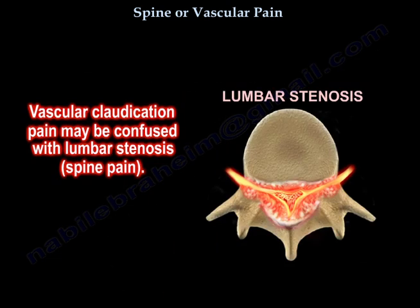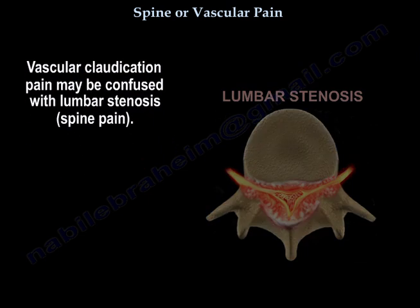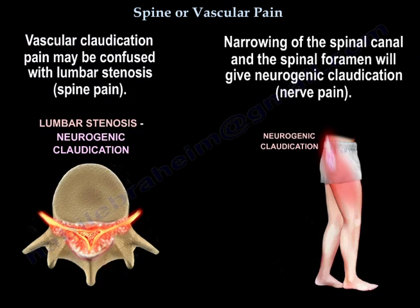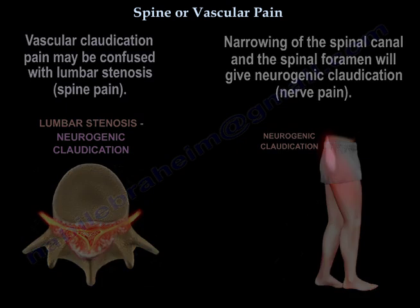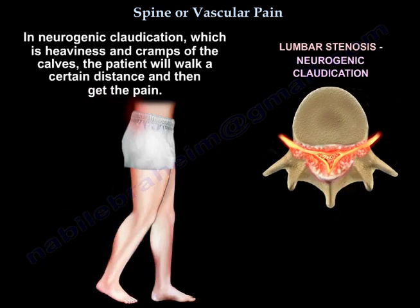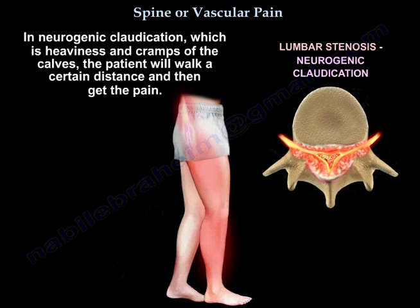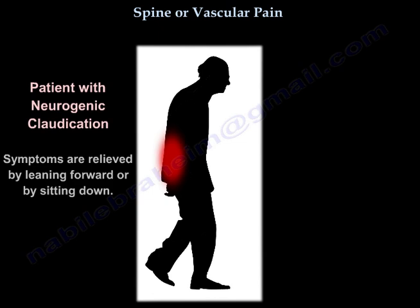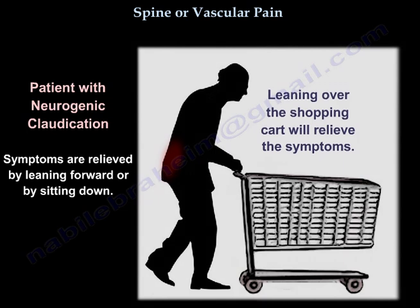Vascular claudication pain may be confused with lumbar stenosis — spine pain. Narrowing of the spinal canal and the spinal foramen will give neurogenic claudication, or nerve pain. The pain from lumbar stenosis radiates from proximal to distal. In neurogenic claudication, which presents as heaviness and cramps of the calves, the patient will walk a certain distance and then get the pain. The patient with neurogenic claudication relieves their symptoms by leaning forward or sitting down.